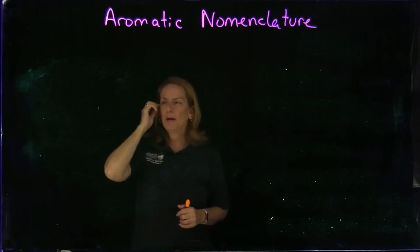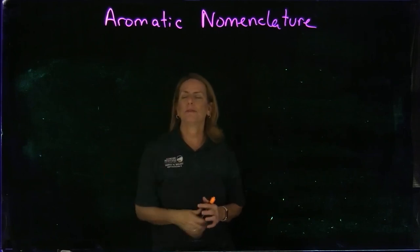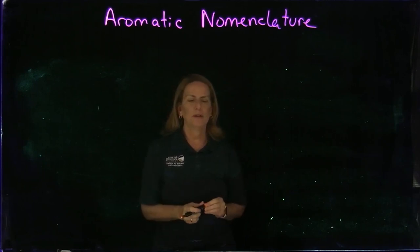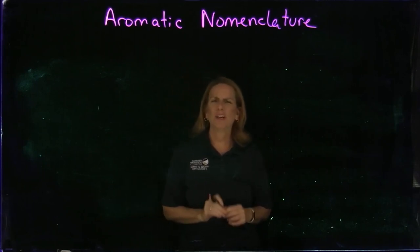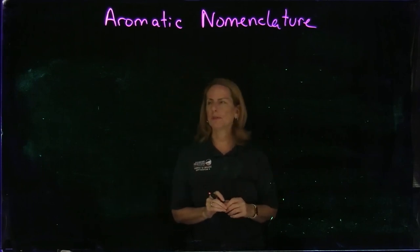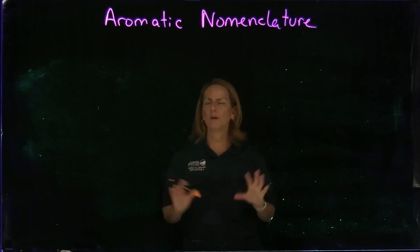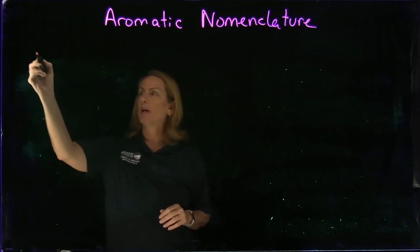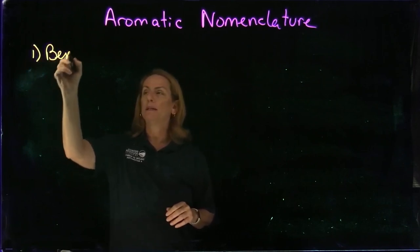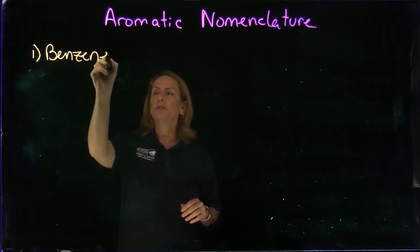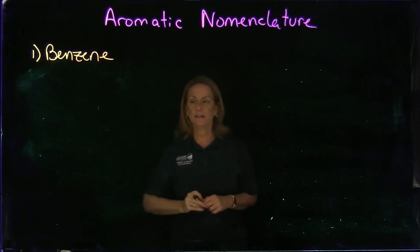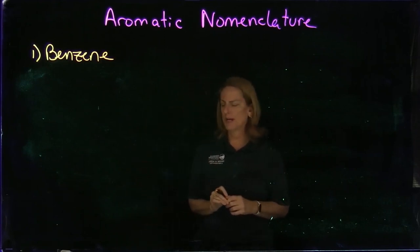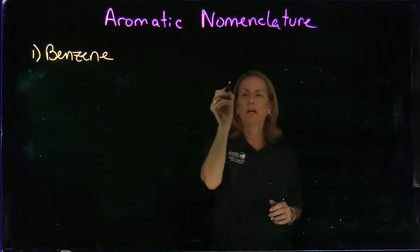Before we start talking about the reactions of aromatic compounds, we need to learn how to name them — nomenclature. Unfortunately, nomenclatures have a lot of common names, so we'll have to learn some of those, but we'll follow our normal IUPAC rules and figure out how to name these compounds. First of all, benzene: normally we would just use benzene as the parent chain under normal situations.